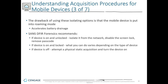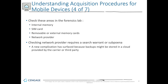The order of volatility still applies even though it's a different type of compute device. You want to check the memory, the SIM card, any removable or external memory card slots, and see if there's anything collectible through the network provider. Checking the network provider will require a search warrant or a subpoena — this is definitely on the public law enforcement side. Backups stored in cloud, through the carrier, or through a third party will also require a search warrant or subpoena, working through law enforcement.